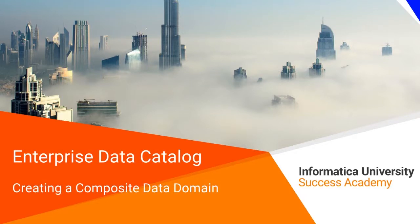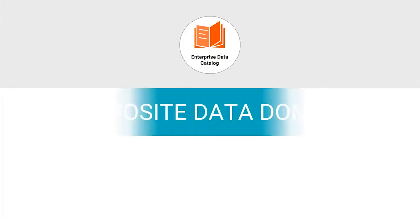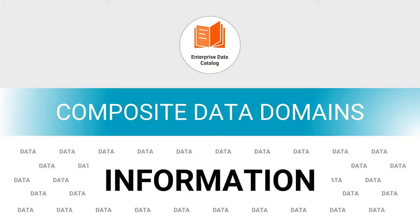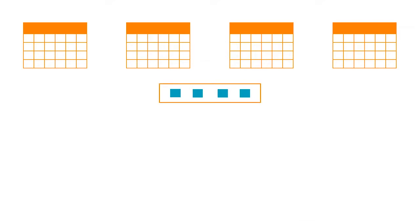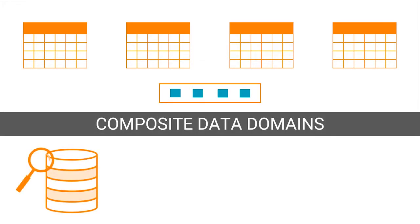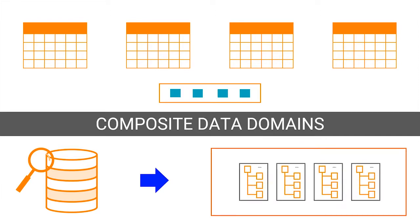Welcome to creating a composite data domain. Using a capability in enterprise data catalog known as composite data domains, you can identify and extract required information from an ocean of data. When you need to search for data that is spread across different tables, composite data domains help you define a search query that includes all the requisite details from across multiple schemas.